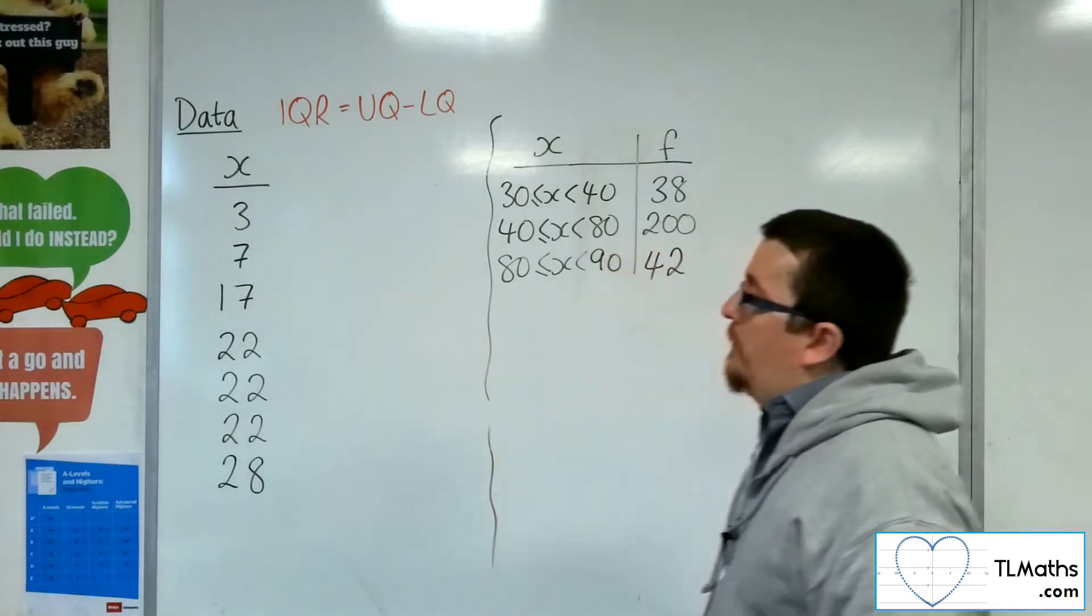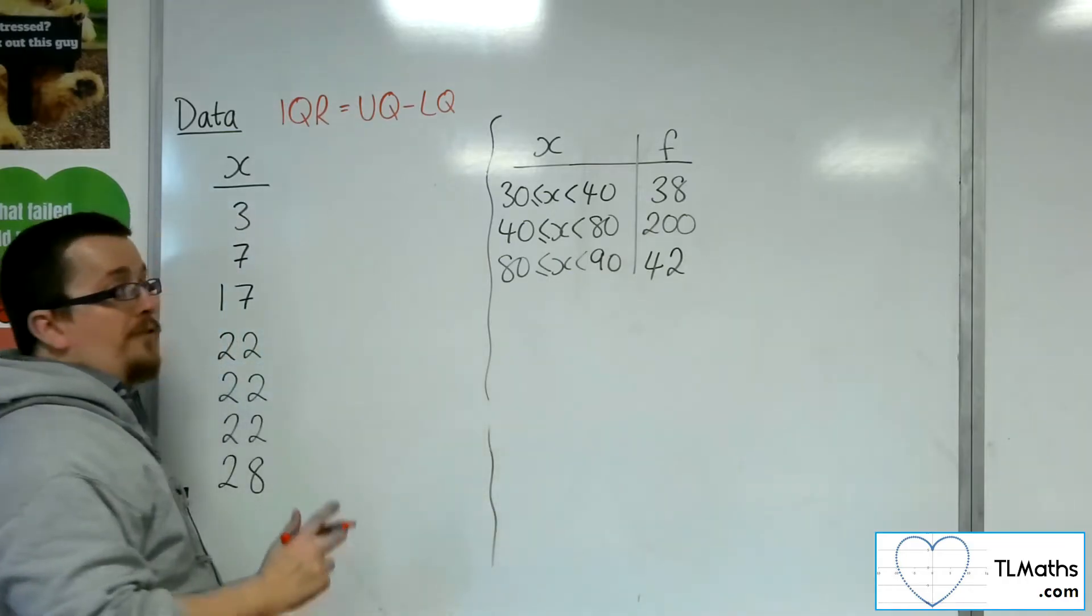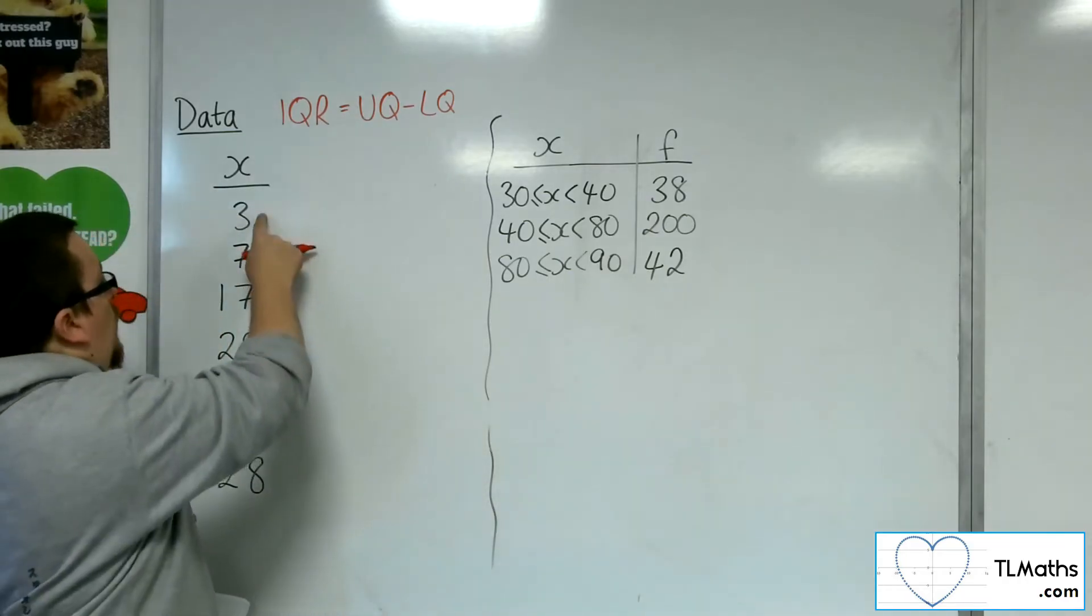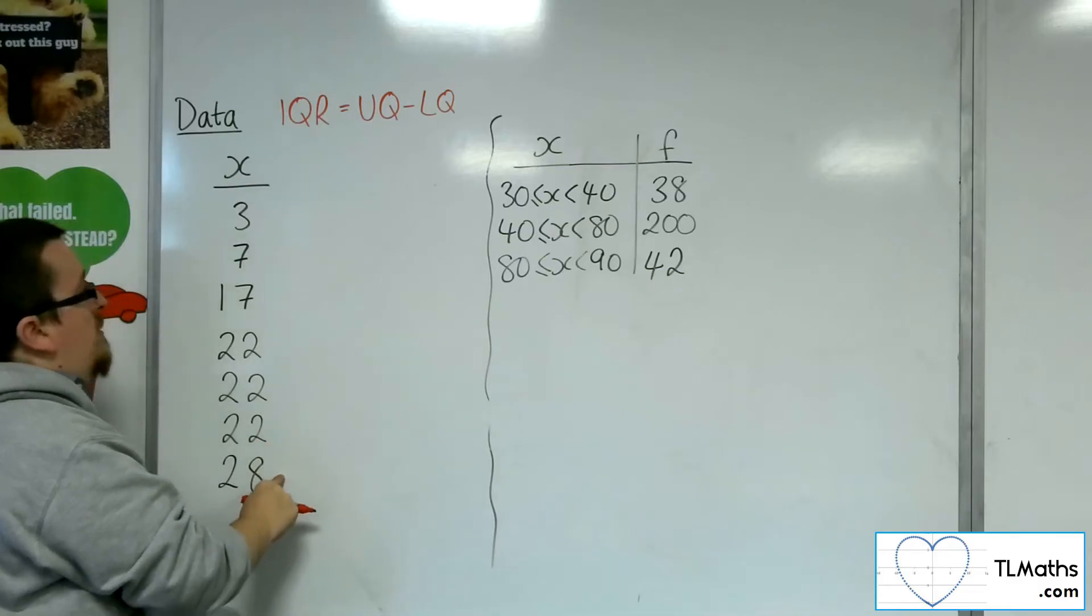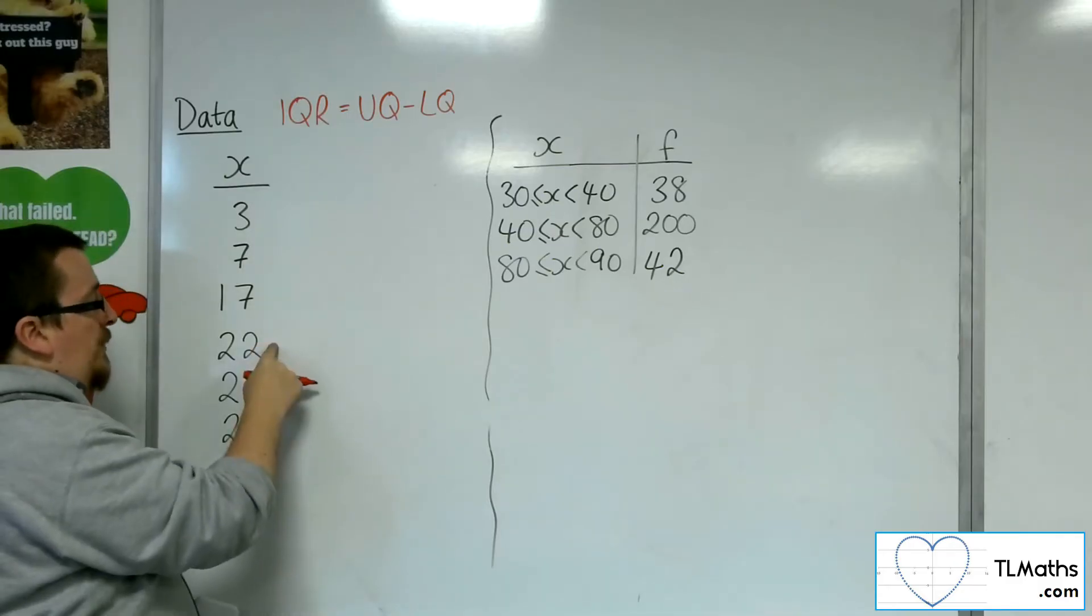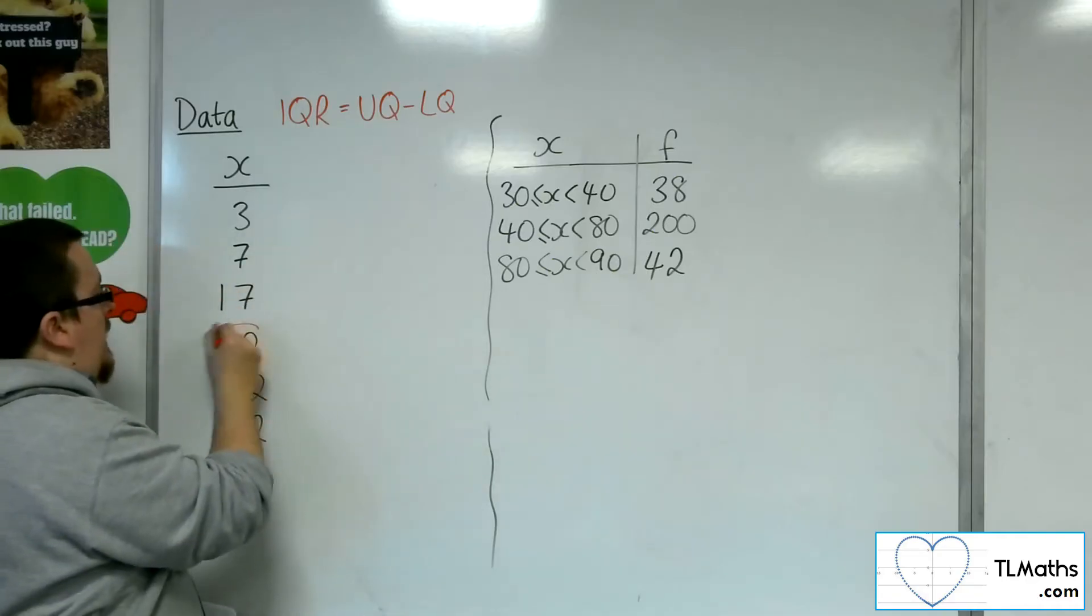So for this set of data here, first thing to do is to find the median value. And we've got 1, 2, 3, 4, 5, 6, 7 bits of data. So the median value will appear at the fourth position. So 7 plus 1 divided by 2. So here is the median.